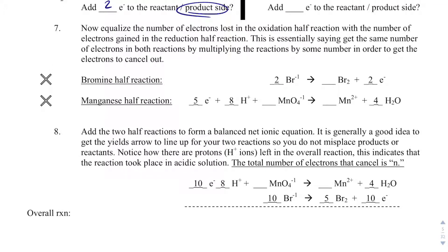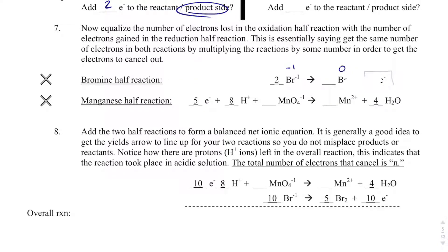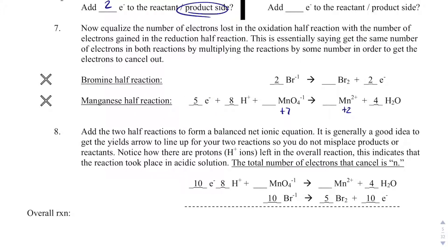Let's verify this makes sense. Bromine is oxidized, so it must be losing electrons — there are the 2 electrons it loses. Bromine goes from negative 1 to 0, so each bromine loses 1 electron, and with 2 bromines that's 2 electrons total. For manganese: it goes from plus 7 to plus 2, a difference of 5, and each manganese gains 5 electrons. With 1 manganese, we see a total of 5 electrons being gained on the reactant side. That all makes sense.